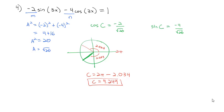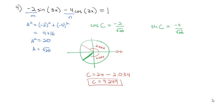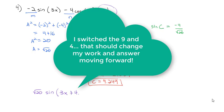We could have also used the sine to get there, but either approach works. We do need to write down both sine and cosine values to confirm which quadrant we're in, so we can figure out exactly what angle c is. Now writing this as a single sine equal to 1: √20·sin(3x + 4.294) = 1.